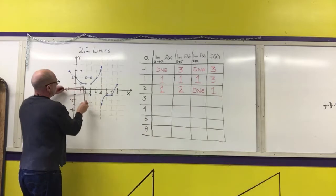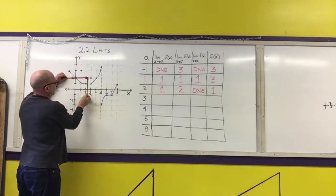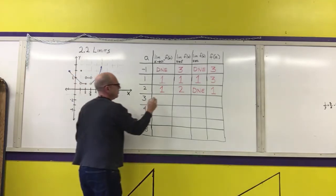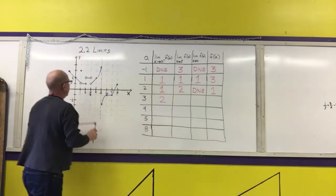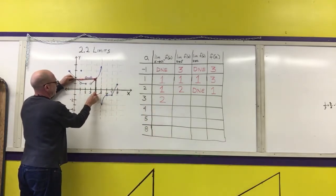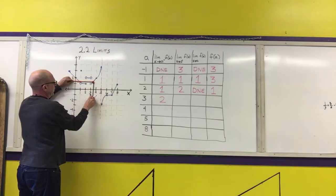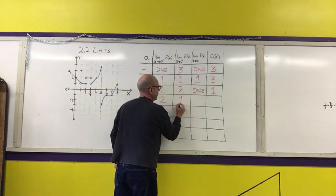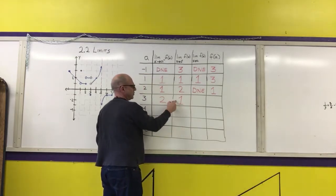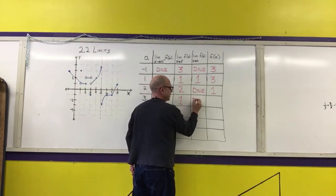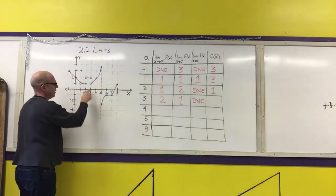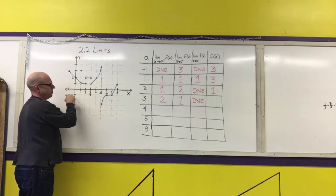For x = 3: as we approach along the graph from the left, the y-value approaches 2. As we approach from the right, the y-value approaches 1. Both one-sided limits exist but they are not the same, therefore the two-sided limit does not exist. When we put 3 into the function, the y-value is -1.